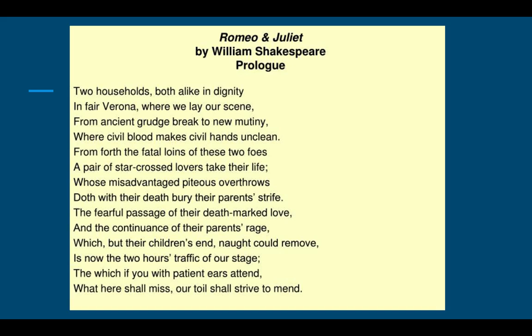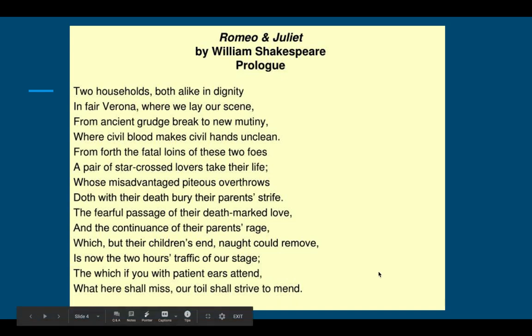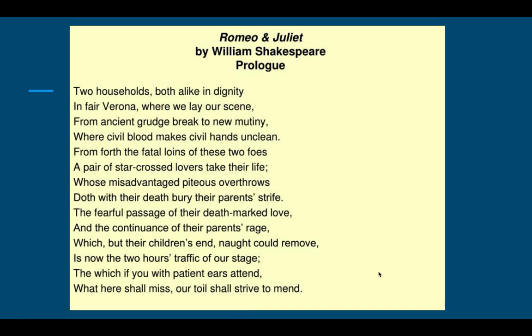Here we have once again the text to the prologue of Romeo and Juliet. We've already mentioned that it's in the form of a sonnet, divided up into quatrains — the first, second, third, and the couplet — so three quatrains and one couplet. Since it's in the form of a sonnet, it is written and therefore spoken in iambic pentameter, which means there are 10 syllables per line, and perhaps even more importantly, there's a certain rhythm to the prologue.